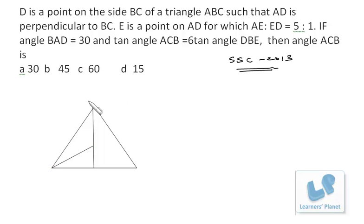I just name that's ABC and this angle I assume to be theta. This angle is given to be 30 degrees and this is D and this angle is 90 degrees. And what is given, E is a point on AD for which AE:ED is 5:1, so I suppose this to be 5X and this to be X.